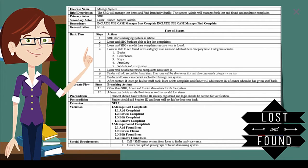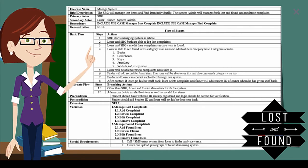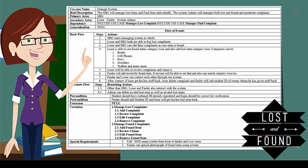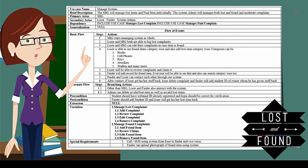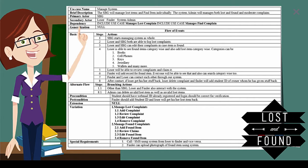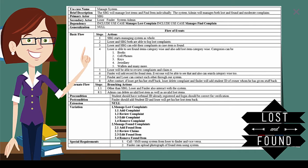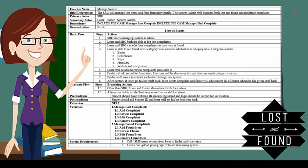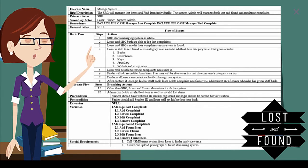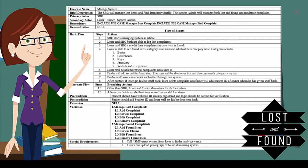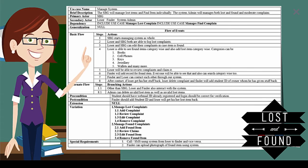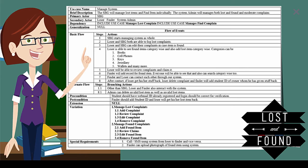Precondition is any additional requirement needed before executing this functionality — the student should have a webmail ID already registered, and the login should be correct for verification. Post condition is the state of the system after performing all these actions — the finder should add the student ID and the loser will get their item back. Extension: no extend use cases exist here, so we write null. Variation includes manage lost complaint with four core functionalities and manage found complaint with four main functionalities.